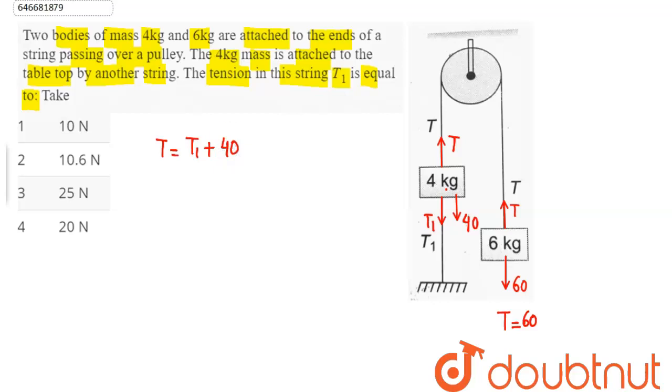Substituting the value of T as 60, we have 60 equals T1 plus 40 which implies that T1 equals 60 minus 40 which is equal to 20 newtons.